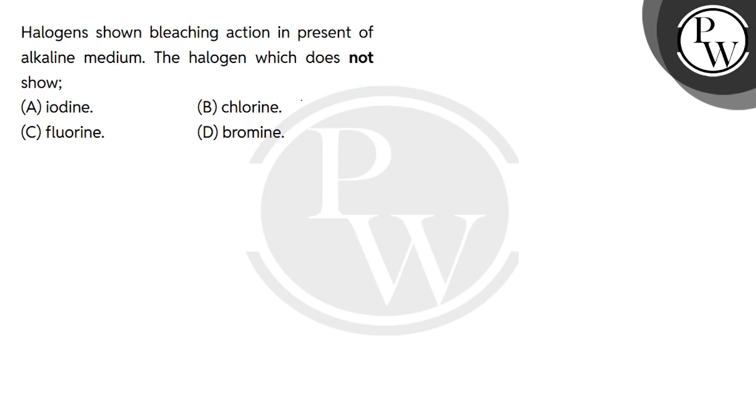There are 4 options given: Iodine, Chlorine, Fluorine, or Bromine. We know that the elements in group 17 are Fluorine, Chlorine, Bromine, and Iodine.